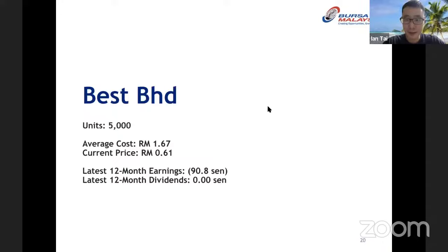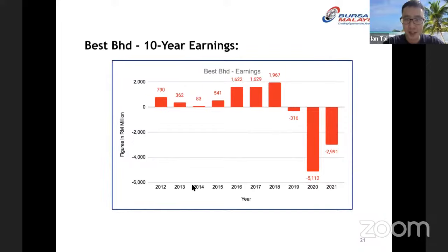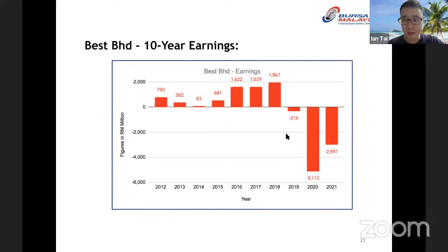Let's start with Best Berhad. In the portfolio we have 5,000 units purchased at RM1.67. The current price is RM0.61. The latest 12-month earnings is negative 90.8 cents — meaning it didn't make money, it incurred losses. Over the last 12 months it paid no dividends. Looking at the 10-year earnings chart: profits declined from 2012 to 2014, then increased from RM83 million up to RM2 billion in 2018, then incurred massive losses in 2019, 2020, and 2021.